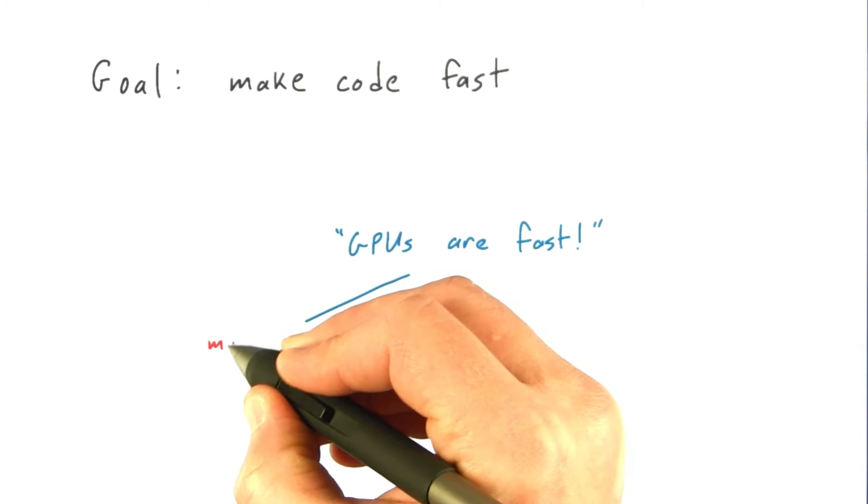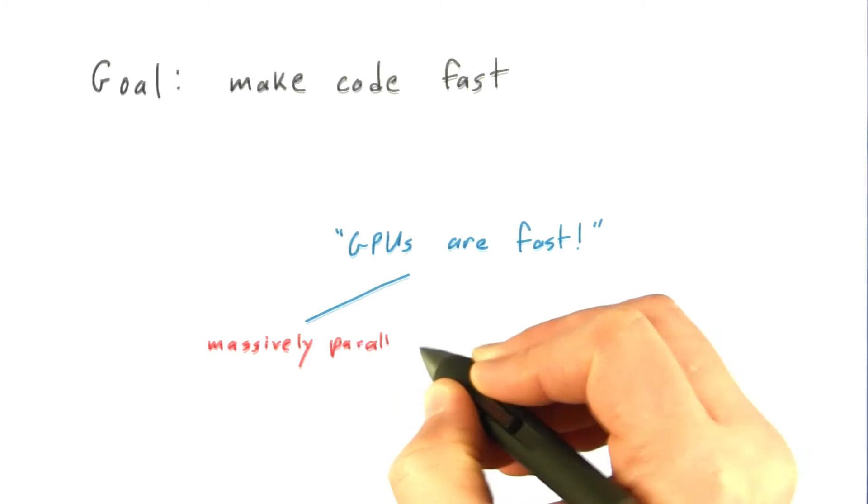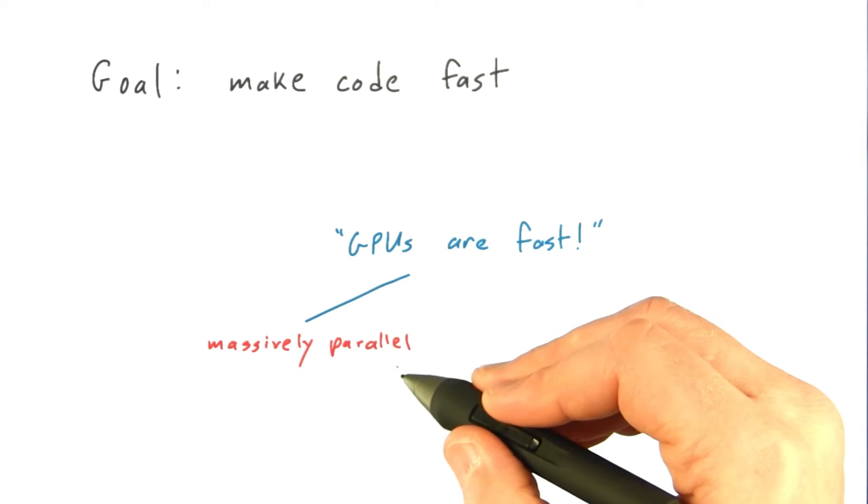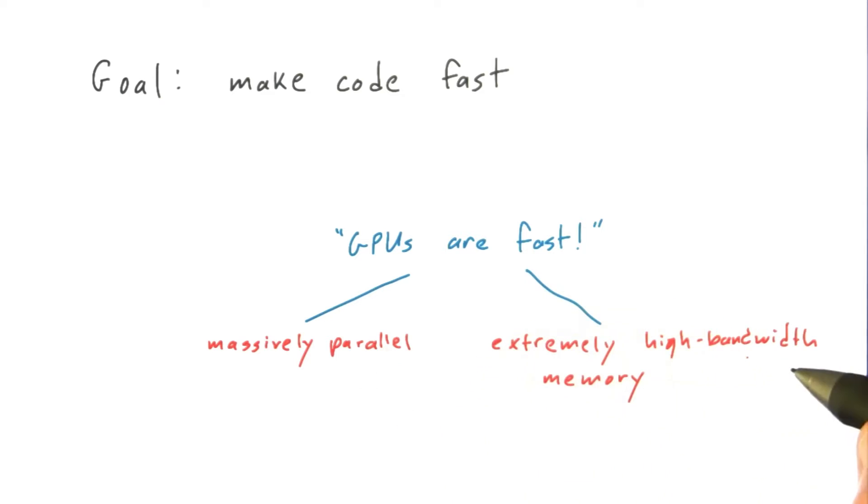GPUs are fast first because they are massively parallel, with hundreds or thousands of processors on a single chip working for you to solve your problem, but also because they have an extremely high bandwidth memory system to feed those massively parallel processors.